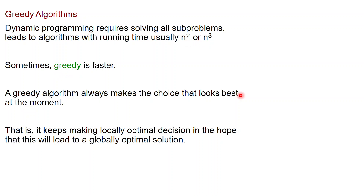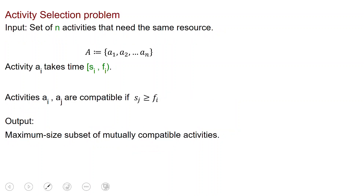At a high level, a greedy algorithm is one that always makes the choice that looks best at the moment, according to some measure of best. That is, it keeps making locally optimal decisions in the hope that they will lead to a globally optimal solution. And in this video we're going to give an example of such an algorithm. Specifically, let us consider the activity selection problem.